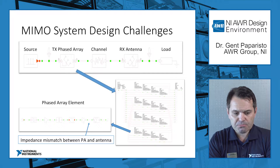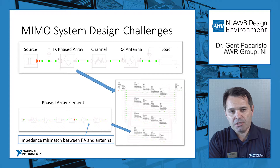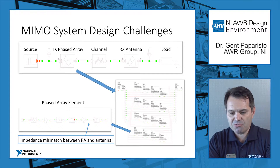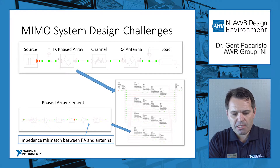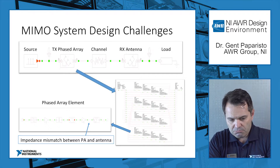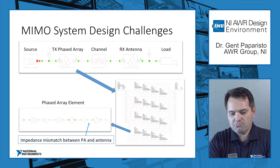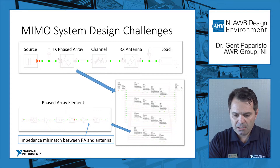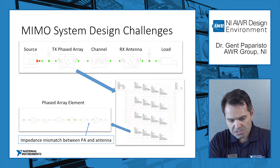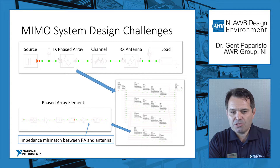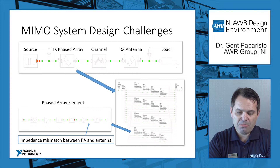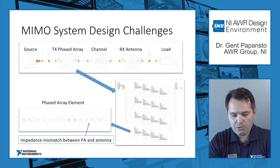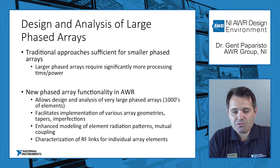Going back to our problem, we're looking at a base station MIMO system. We have a source that goes through a transmitter phased array, through a channel, to a receiver antenna with further processing. We will focus on the transmitter phased array, which contains multiple elements — in this case a simple 16-element, 4 by 4 phased array. Each element has its own RF link, and one of the key challenges is impedance matching between the PA and the antenna.